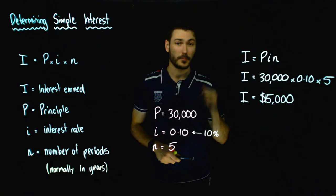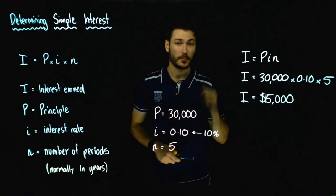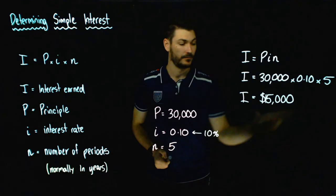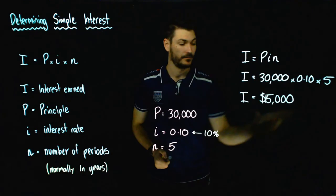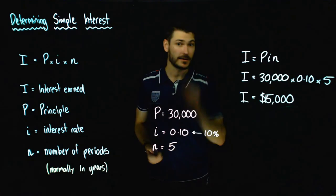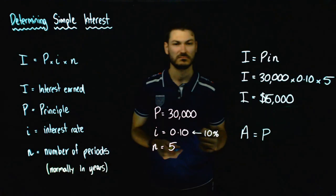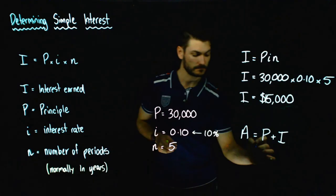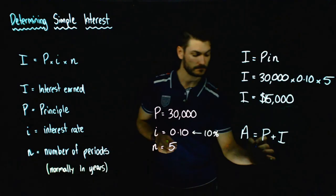That means when I pay back the car after those 5 years, I'm giving the bank the $30,000 they initially gave me, plus — as a thank you — the $15,000 that has accrued in interest. Now, some questions just purely ask how much interest is earned or owed — that's this answer here. But be careful: your question might say how much in total do you need to pay the bank back? In that case, we need an extra formula: A, the amount we're paying back, is equal to the principal plus the interest amount, capital I.